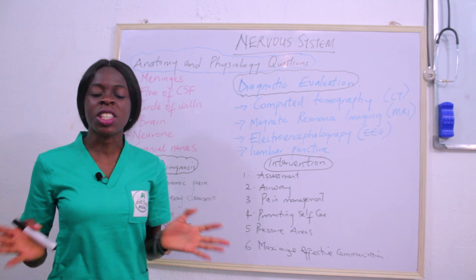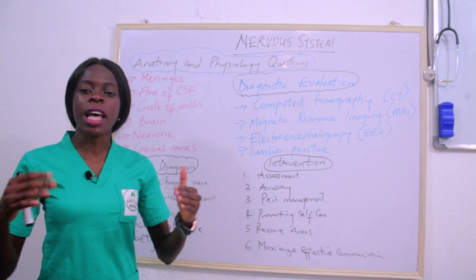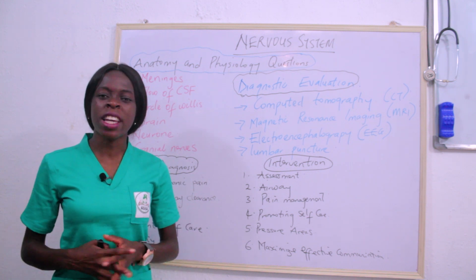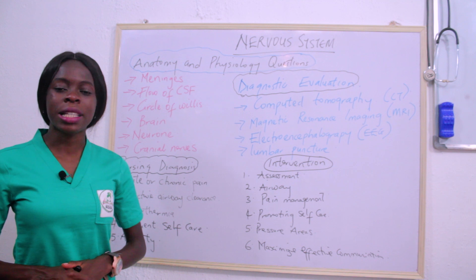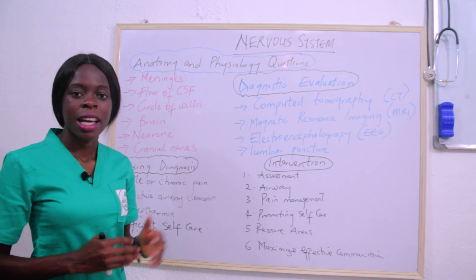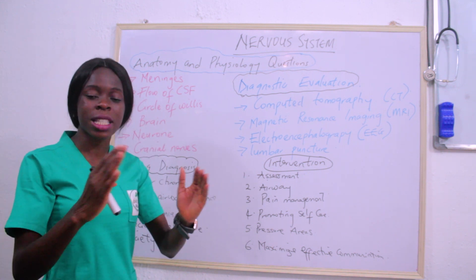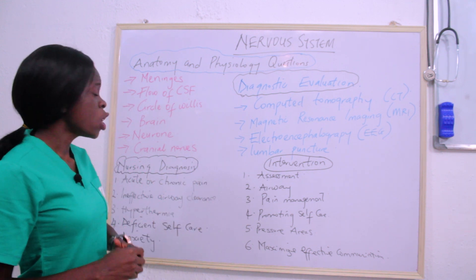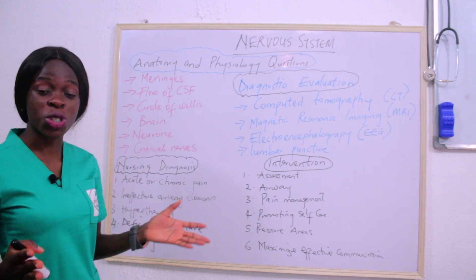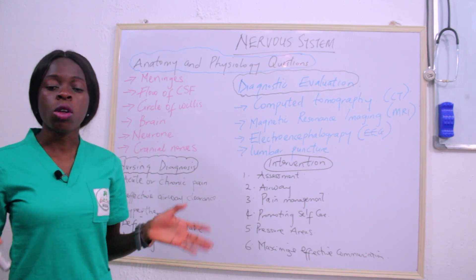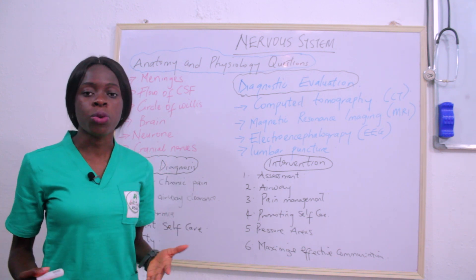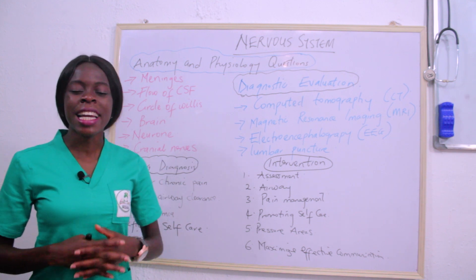The first topic on the board is meninges. You can get a question like: 'With the aid of a well-labeled diagram, describe the flow of the cerebrospinal fluid,' or 'Describe the circle of Willis — how blood circulates around the brain.' You can also get questions asking you to describe the brain, describe the neuron, and explain the 12 cranial nerves, stating whether they are sensory, motor, or both.